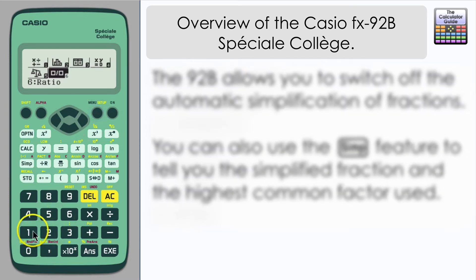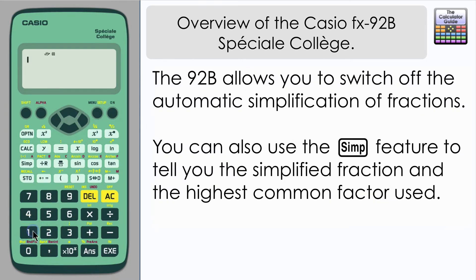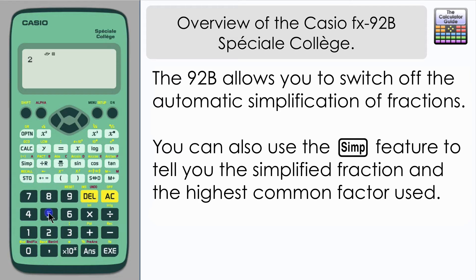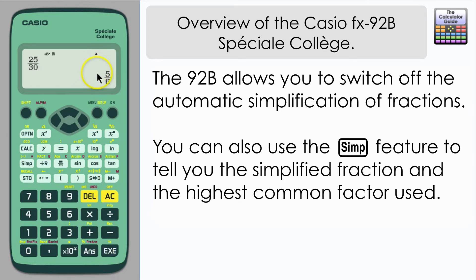This calculator is also very good for simplifying fractions in a different way — it actually has a simplifying feature, which you can see highlighted by the Simp button. Now if I wanted to simplify the fraction 25 over 30, the calculator should do that automatically by pressing equals. And here we have the simplified version 5/6.